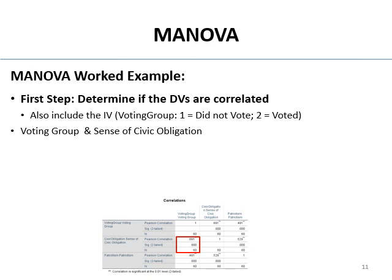Voting group only has two levels: one is you didn't vote, two is you voted. So as sense of civic obligation goes up, voting group goes up — meaning you voted. It's easier to say: voters tend to have a higher sense of civic obligation. For voting group and patriotism: also positively correlated, also significant. Those who voted tend to have a higher sense of patriotism.